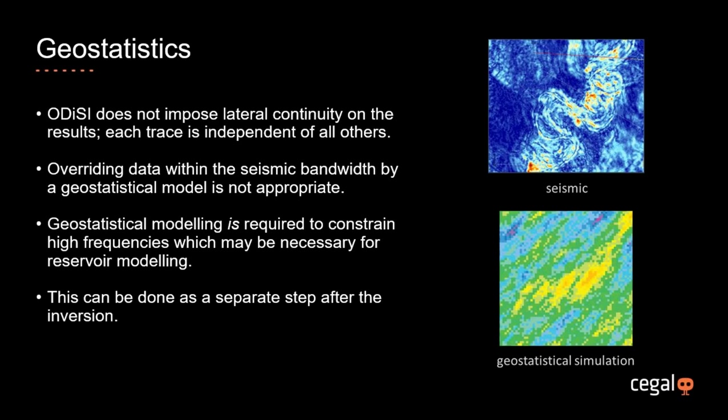Odyssey does not impose any lateral continuity on the results — every trace is independent of every other, and no geostatistical model is used in the process. Within the seismic bandwidth, overriding the seismic image with geostatistical simulation is not appropriate; we should not override data with a model. For the seismic inversion process itself, there is no need to invoke geostatistics. If generating a reservoir model at resolution greater than that provided by the seismic data, we may need to add high frequencies using a geostatistical model — but that can be done sequentially after the inversion. Combining it within the inversion makes the process unnecessarily complicated and reduces our ability to quality-control the output. The belief is to separate geostatistics from inversion.